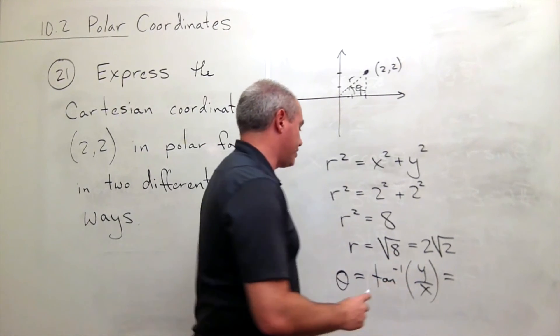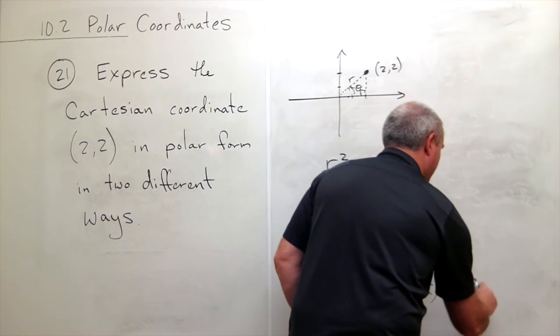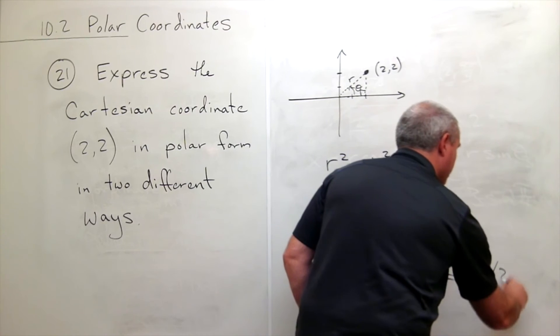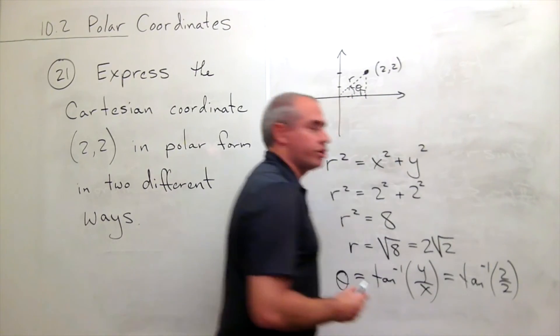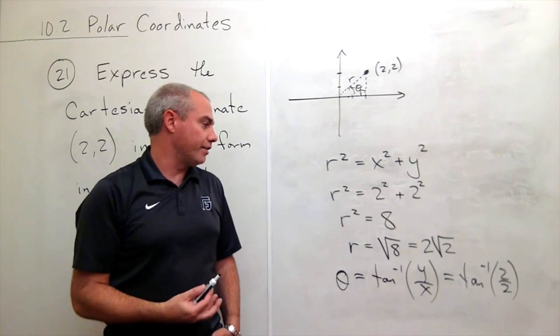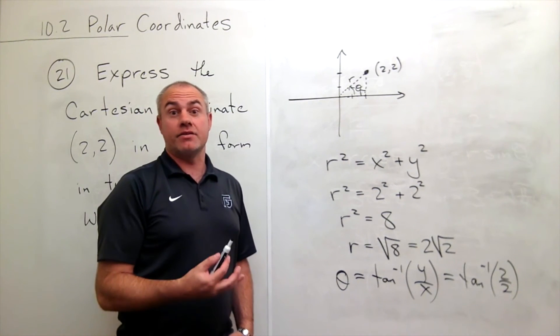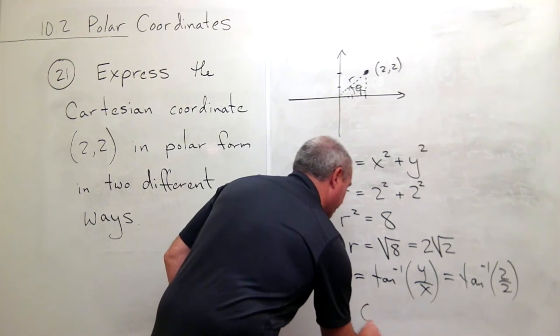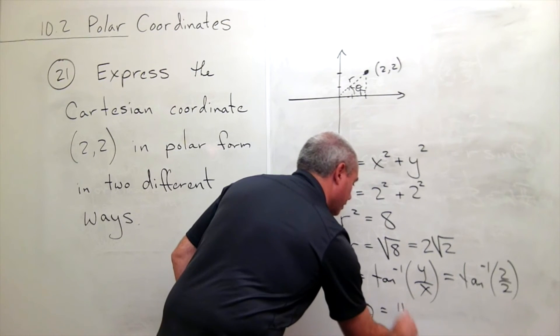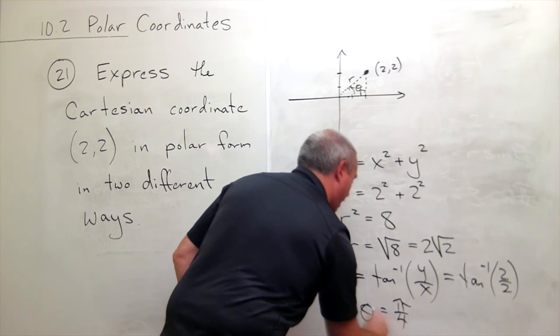Well, y is 2 and x is 2, so I get that this is tan⁻¹ of 2 divided by 2, which is just tan⁻¹ of 1. Tan⁻¹ of 1 is π/4, so I get that theta must be π/4.